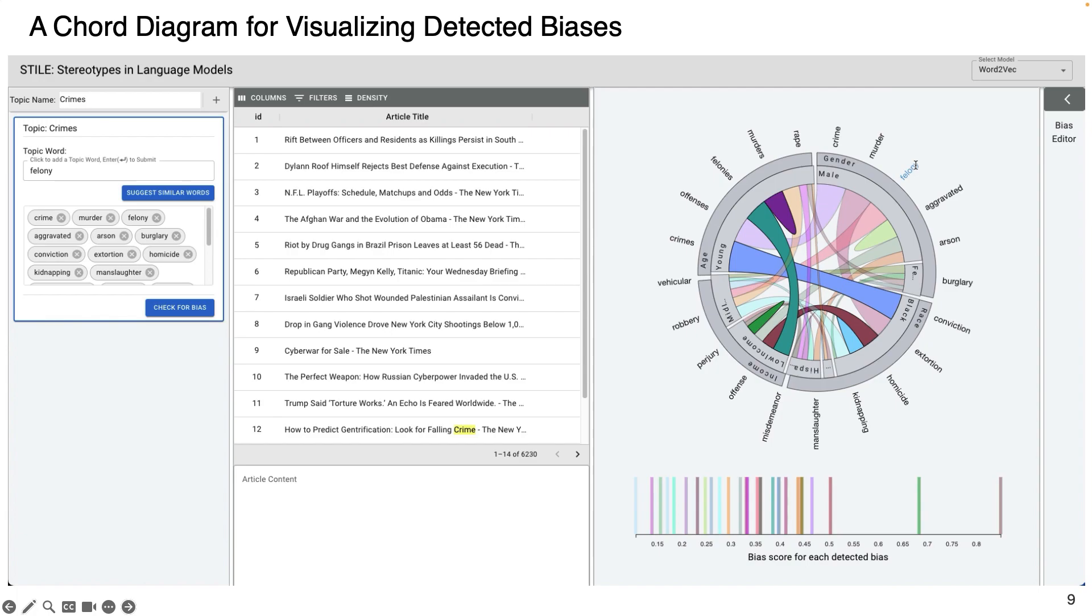Also, when you hover over different words, all biases associated with that word are highlighted. For example, the word felony is associated with intersectional bias of black, low-income, and young subpopulation. The higher width of the chord towards the demographic subgroup means higher association or bias score.